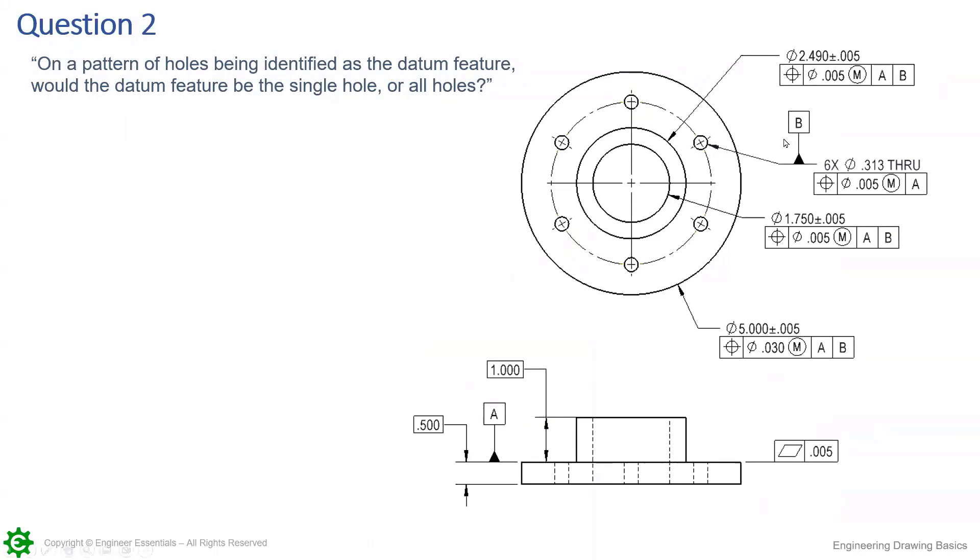We have the sample drawing here where we're showing datum B directly applied to this size dimension, and it's a pattern of six holes. Just because this leader arrow is pointing to this specific hole does not make this hole datum B.